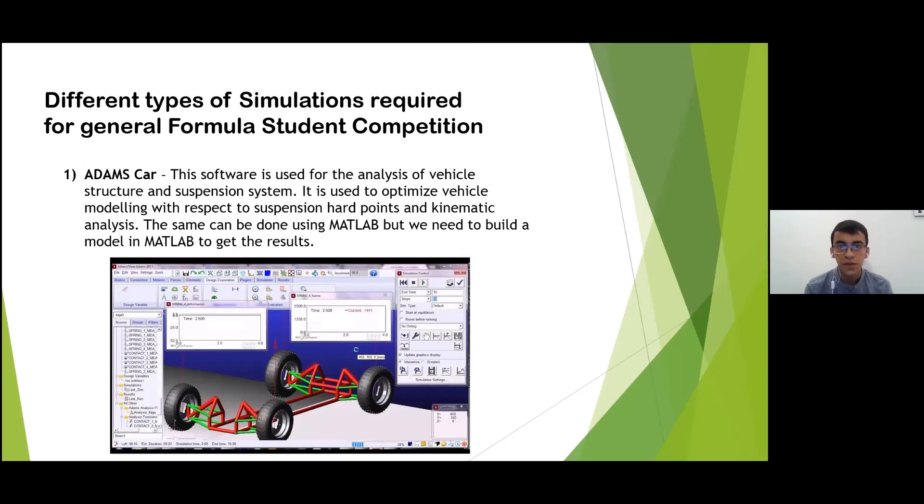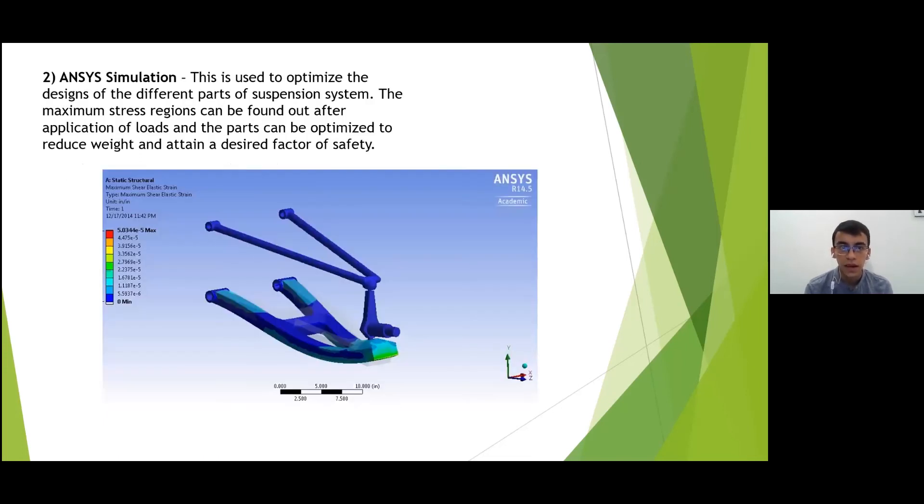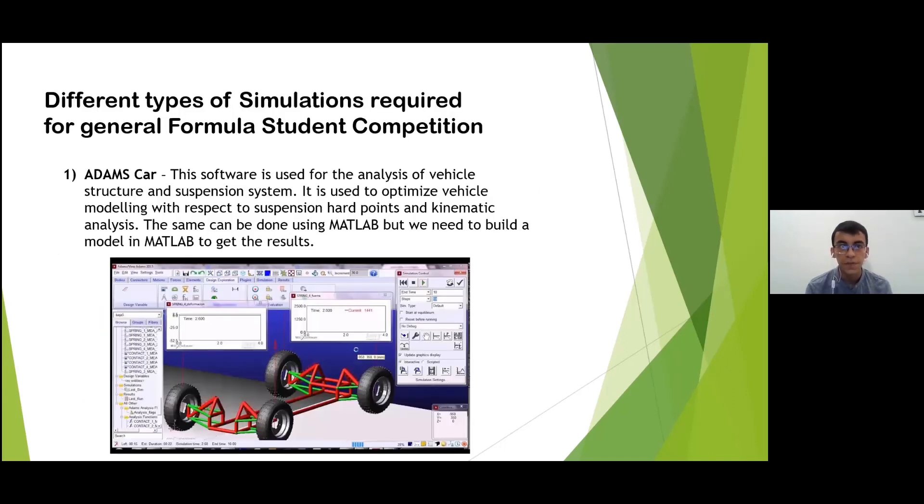Now let's look at the different simulations required for a general Formula Student competition. We use three different simulations: Adam's Car, ANSYS simulations and Lotus Suspension Analysis. Adam's Car is a software that is used for vehicle structure and suspension system analysis. It is used to optimize vehicle modeling with respect to suspension hard points and also used for kinematic analysis. This same thing can be done using MATLAB but in MATLAB we have to build a model whereas in Adam's Car the model is built into the software and we just need to input our data.